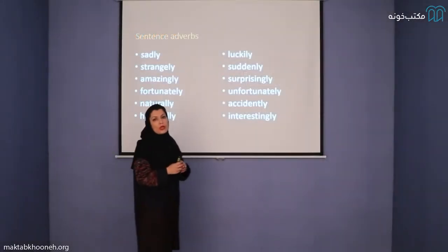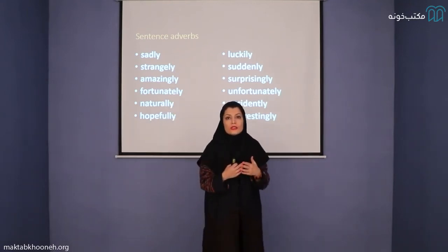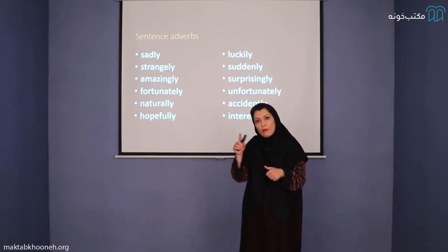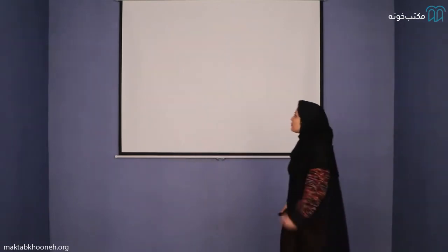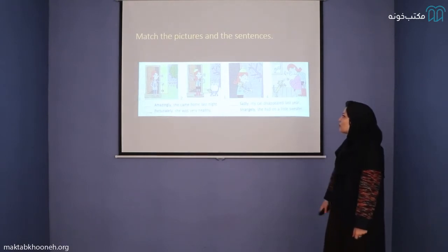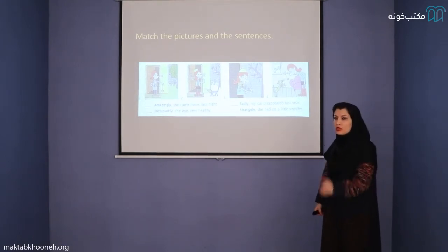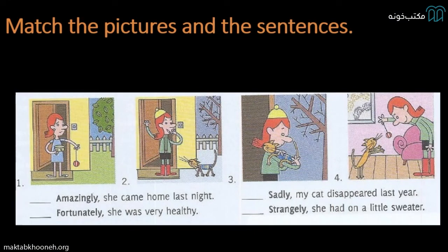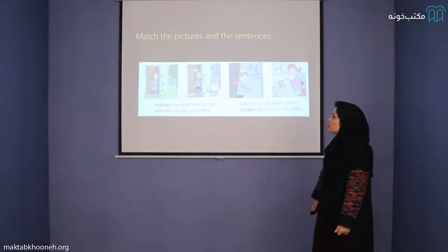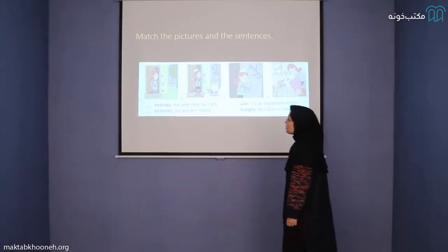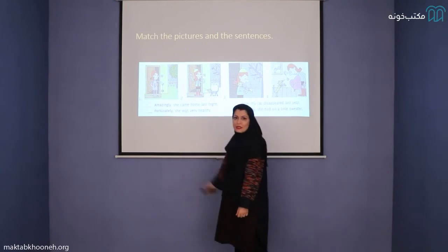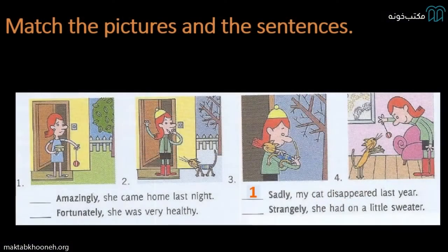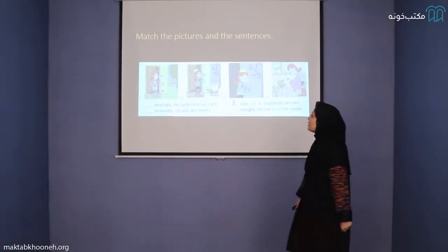So, whenever we're talking about our opinions, our thoughts, we can use sentence adverbs, a comma, and then give our opinion. Take a look at these pictures — we have four pictures here. I want you to pause the video and match the pictures with the statements. In the first picture, the woman looks sad. So this is the first one: sadly, my cat disappeared last year. This story is about the woman's cat disappearing.